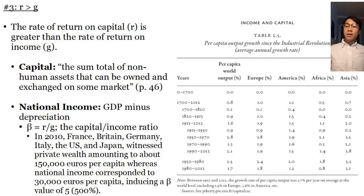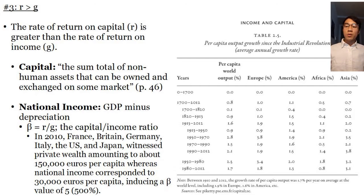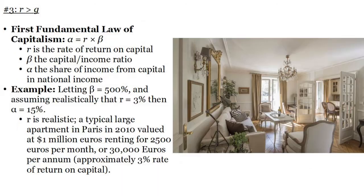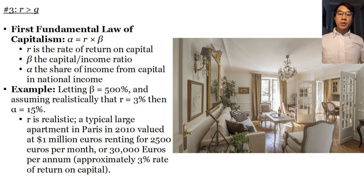So in 2010, France, Britain, Germany, Italy, the US, and Japan witnessed private wealth amounting to about 150,000 euros per capita on average — not to say that the variance of the distribution does not depend on these countries. National income corresponds to 30,000 euros per capita, introducing a beta value of 5, or about 500%.